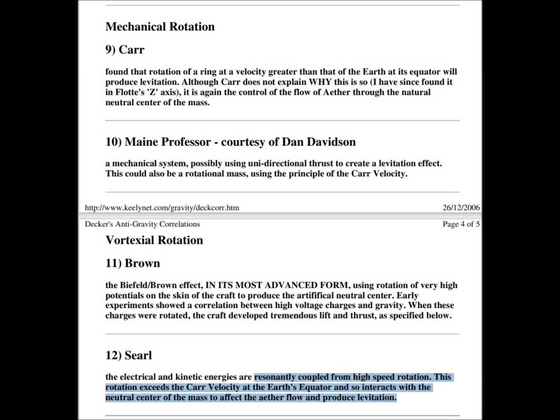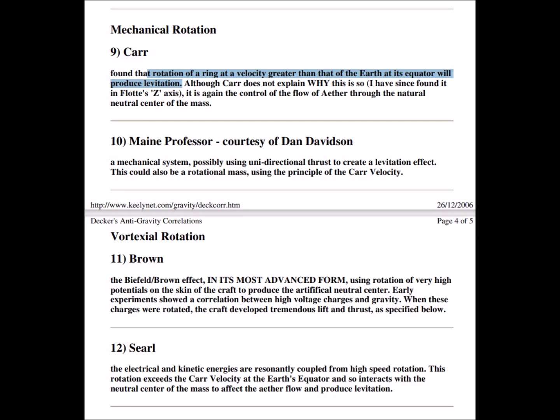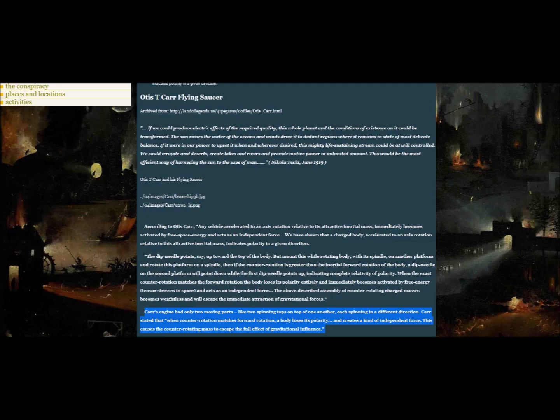Otis Carr in particular stated that if an object like a disc were rotated fast enough in relation to the Earth's rotation at the equator, then that motion would begin to cancel out the effect of gravity.